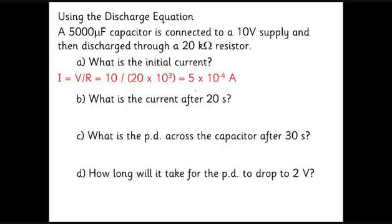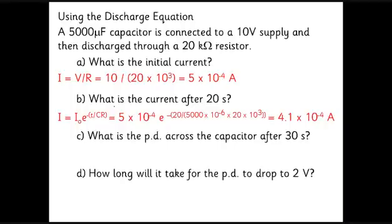What's the current after 20 seconds? Well, what we've got to do there is to use our equation for I equals I naught E to the minus T over CR. So there's our initial current, 5 times 10 to the minus 4, E to the minus 20 seconds over, and this is capacitance, is 5,000 microfarads. Here's our time, 20 kilo-ohms. So if you put all that in carefully to your calculator, you get 4.1 times 10 to the minus 4.